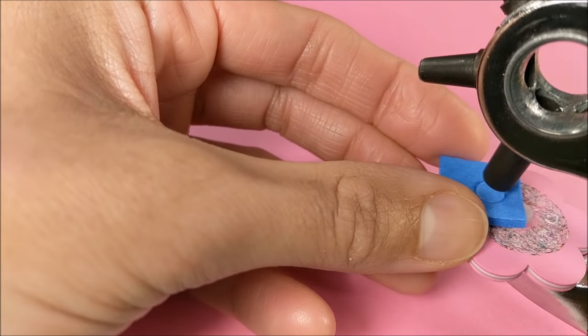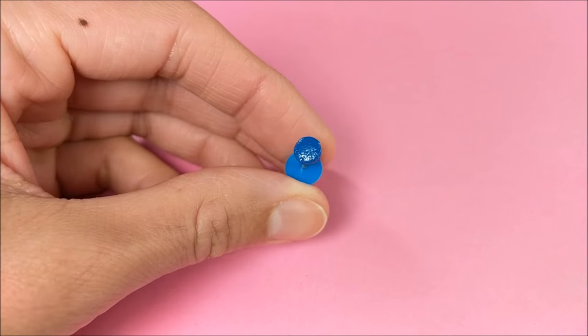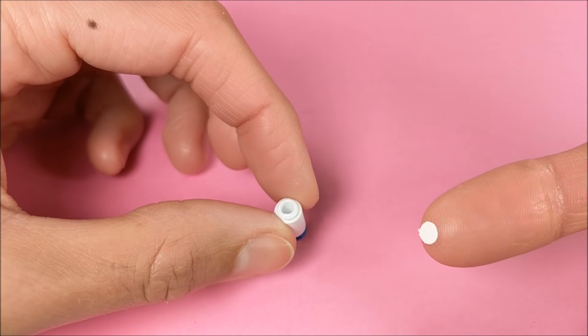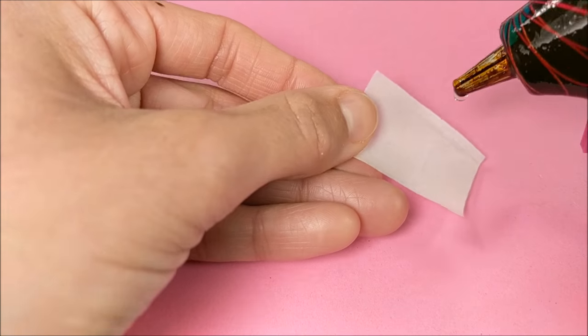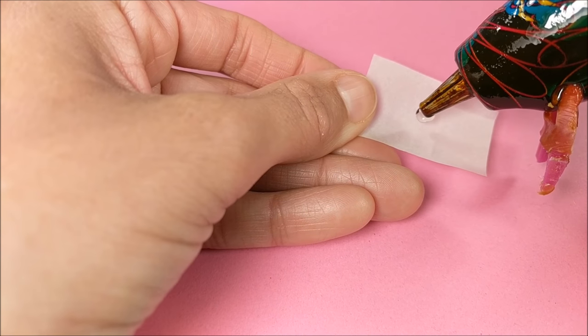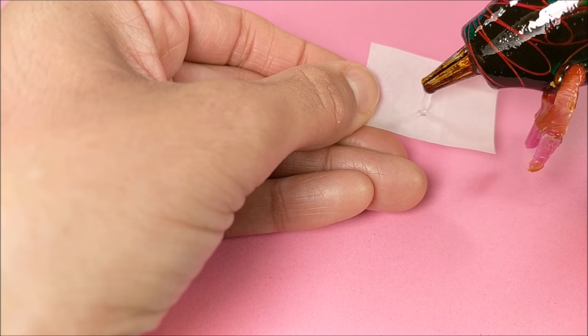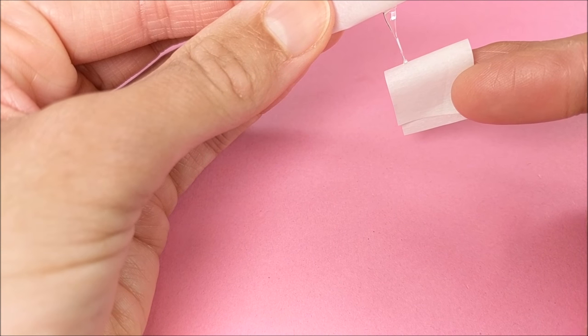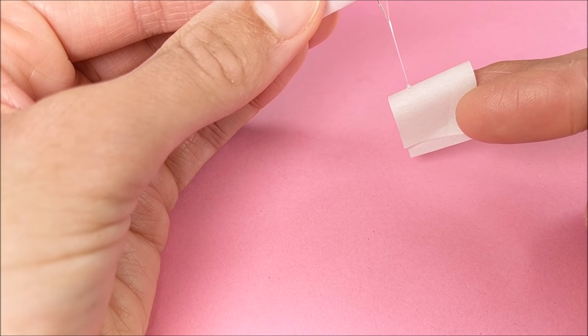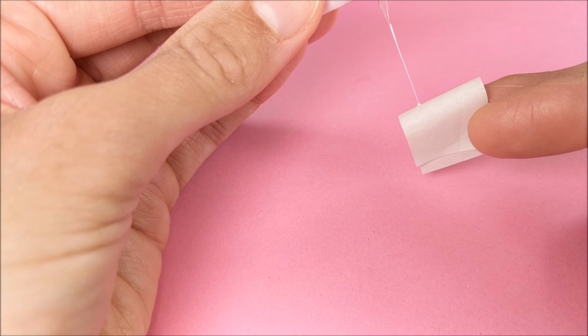For my dropper, I use hot glue on parchment paper and manipulate it by flipping it over, then use more parchment paper to drag it out and thin it along the bottom.